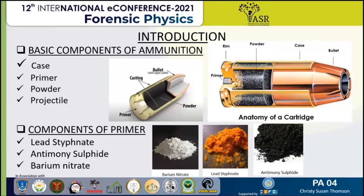When we come to the constituents of the primer, the major primer elements are lead — the primer explosive, lead styphnate. This releases oxygen for barium nitrate, which is the second component of the primer, and then this oxygen goes to antimony, which is in the reduced form, antimony sulfide. Thus the nitrate burns the antimony. So these are the three elements of the primer.